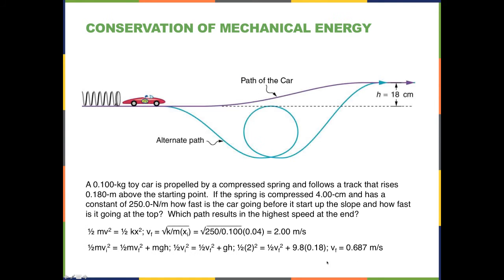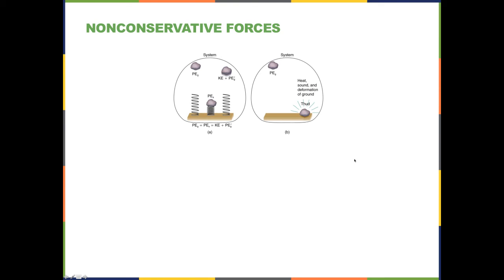The answer to which path results in the highest speed is: it doesn't matter, because this is path independent. The velocity before the slope is 2 m/s and the velocity at the top is 0.687 m/s regardless of whether the car takes the straight path or the loop-de-loop — both paths yield the same result.